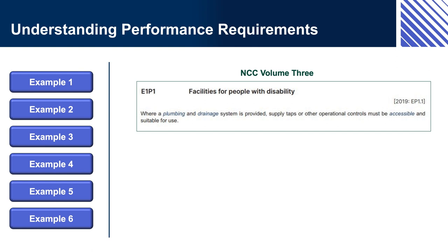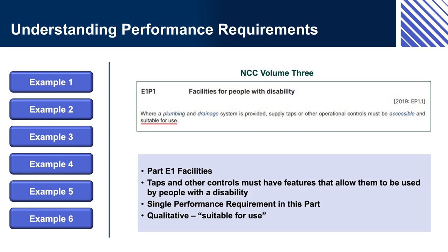Example 6 — NCC Volume 3, E1P1: Facilities for People with Disability. Section E Facilities, Part E1 Facilities requires that taps and other controls must have features that allow them to be used by people with a disability. This is the single performance requirement in this part and is qualitative — 'suitable for use'. An appropriate authority would determine what kind of taps and other controls would be considered suitable. For example, in some circumstances, voice or motion activated taps could be considered suitable.